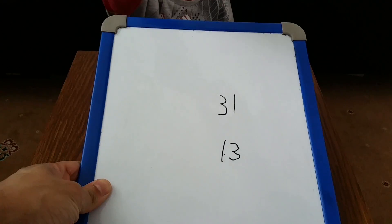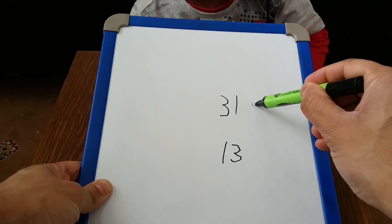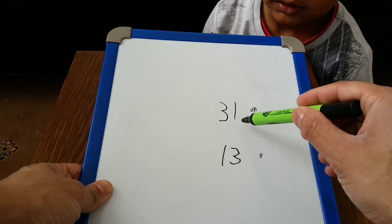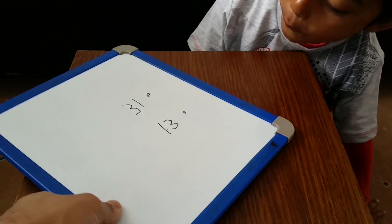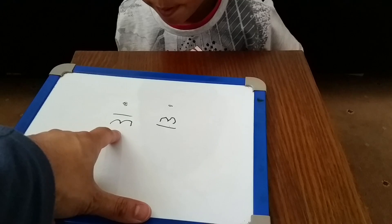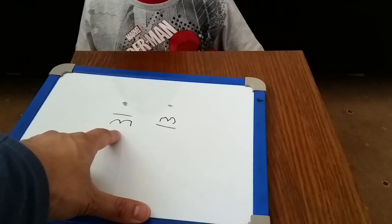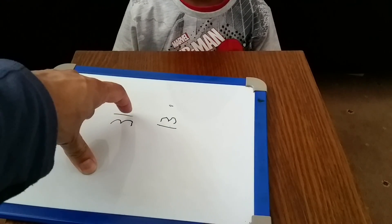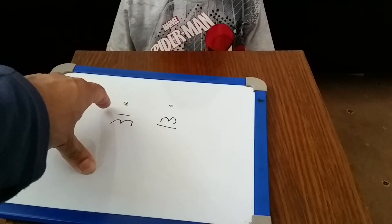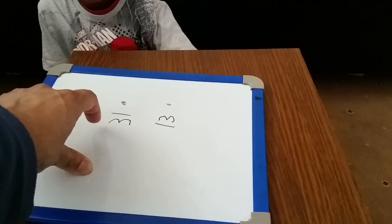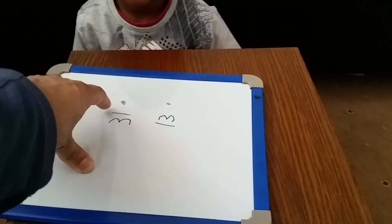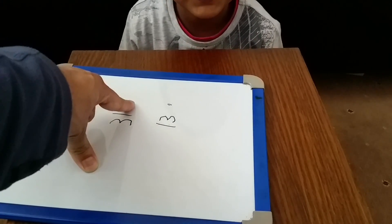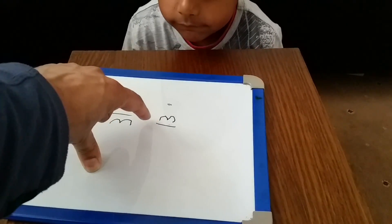First, grab my pen — thank you. First you wrote this one, and then you wrote this one. What do you think this number is? 30. And what do you think this one is? How come you've got this — so it's 30. What does that make altogether? 31.